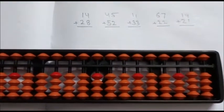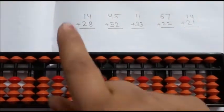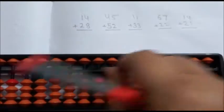How to do 2 digit addition in an abacus? First question is 14 plus 28.